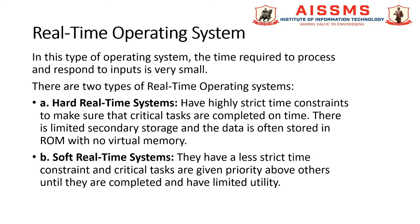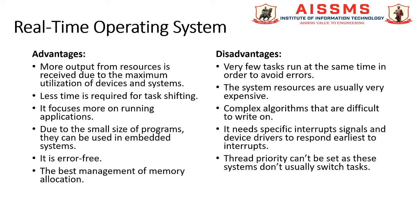Whereas in a soft real-time system, they have less strict time constraints and critical tasks are given priority above others until they are completed, and have limited utility. Moving to the advantages and disadvantages of real-time operating system.